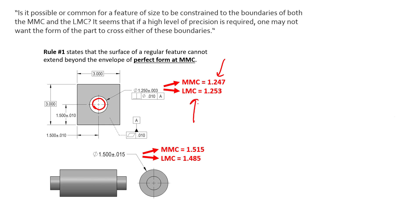And then the opposite is true for the external feature. If we grow in diameter, we're adding material, so our MMC is going to be the largest diameter and our LMC is going to be the smallest diameter.